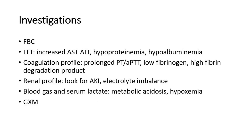For investigations, do a full blood count as a baseline to check white cell count, blood lead, and hematocrit levels. Liver function tests typically show raised AST and ALT, with AST higher than ALT. Check for hypoproteinemia (a sign of plasma leakage) and hypoalbuminemia (a sign of hemoconcentration). Check the coagulation profile for prolonged PT or APTT, low fibrinogen, and high FDP, which are signs of disseminated intravascular coagulation (DIC). For renal profile, check urea and creatinine for acute kidney injury, and electrolytes for hyponatremia and hyperkalemia. Do blood gas and serum lactate in severe cases for metabolic acidosis or hypoxemia, and group and cross-match in cases of severe dengue hemorrhagic fever or shock.